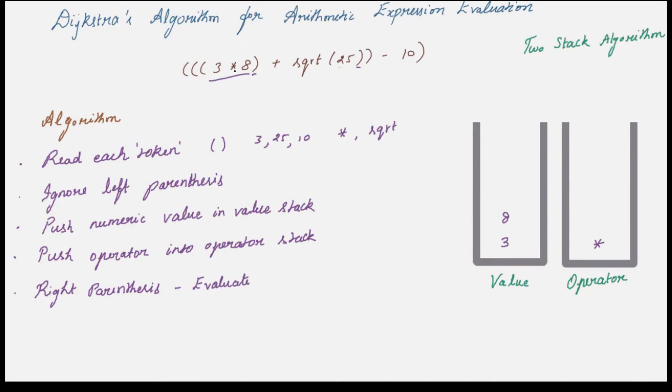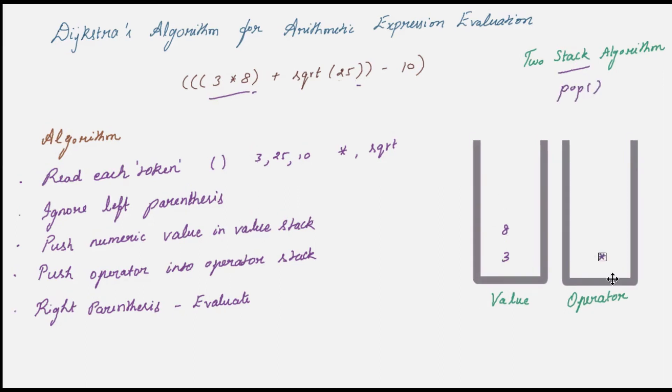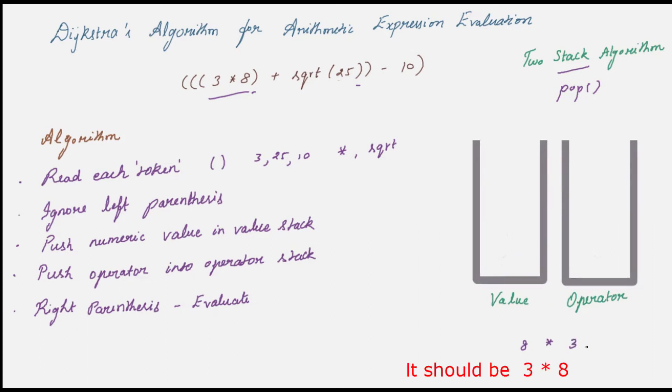You just need the recent operator and the corresponding values. This is where stack is going to make your job very easy. A simple pop operation will fetch you the most recent values. So pop the most recent operator. Then pop the corresponding number of values. Here multiplication requires two values. Now perform the operation 8 times 3 gives 24. Push that into the value stack.